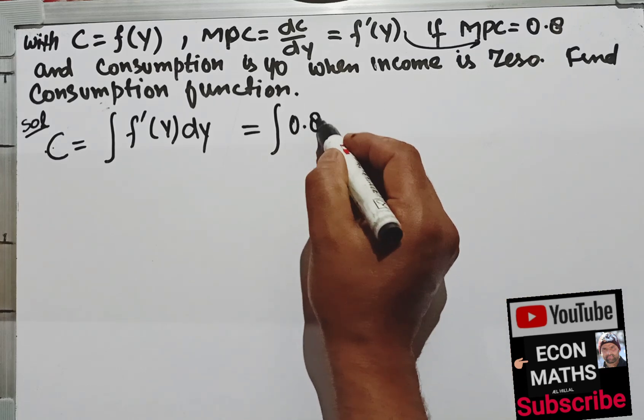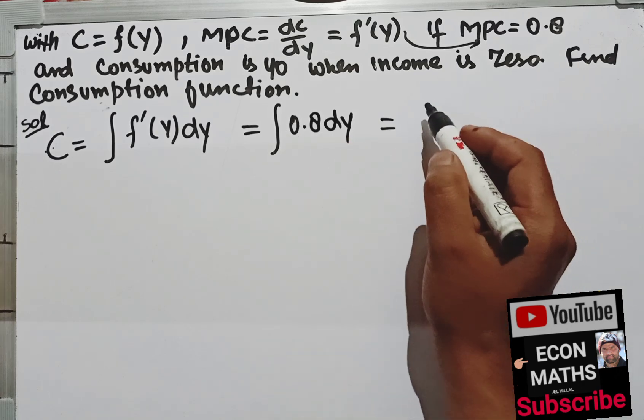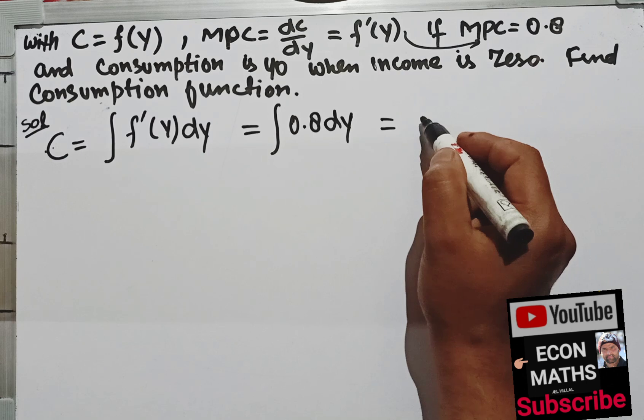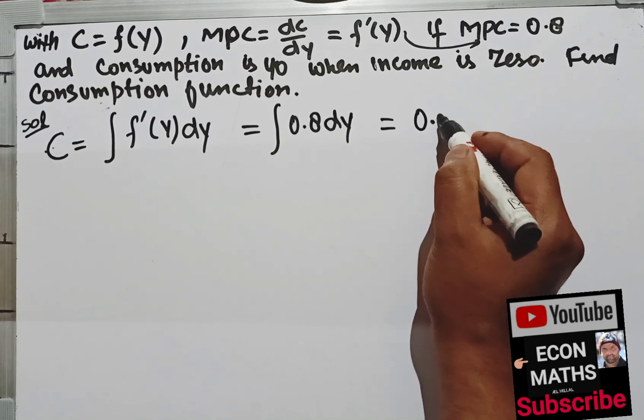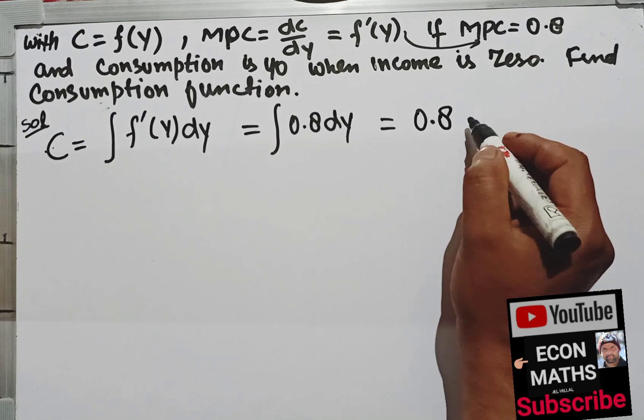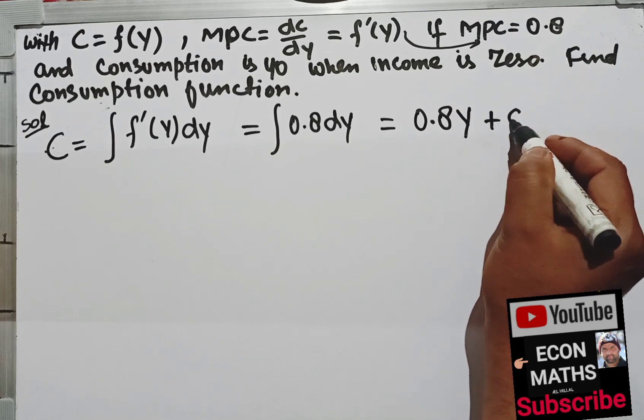Now integrating this will be 0.8y, so this will become 0.8. Now the integration of dy is y, so I will write y plus the constant of integration, that is this c.